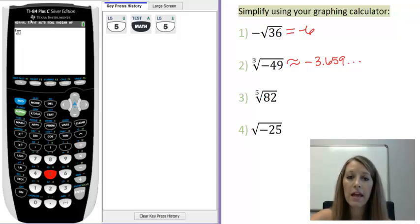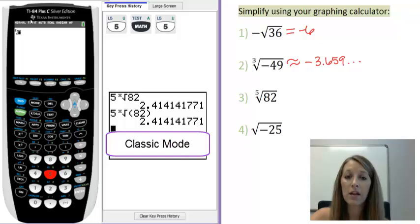Now, this is a newer version of the calculator, so it changes things into what's called the math print mode. If you had an older version of the calculator, it would just look like 5 and then the x root, and that tells you that that's taking it as the fifth root.